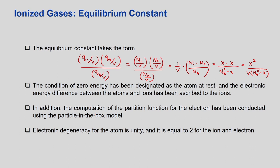To evaluate the partition functions of the ion, electron, and atom, we set the zero energy condition to the atom at rest, and ascribe the electronic energy difference between atoms and ions to the ions only. The partition function for the electron is computed using the particle-in-a-box model. The electronic degeneracy for the atom is unity (reactant side = 1), and for both the ion and electron on the product side it is 2.